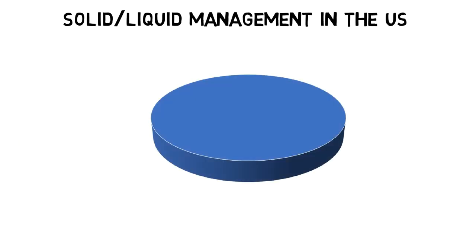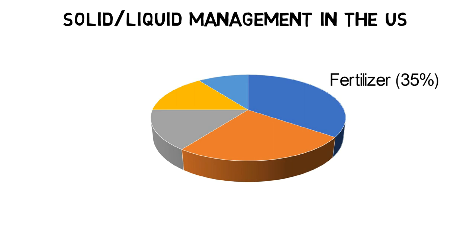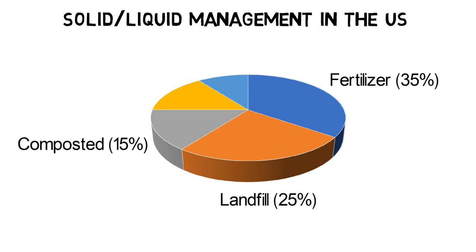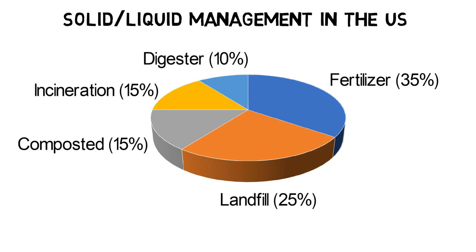In the US, about 35% of WAS is used as fertilizer for agriculture, 25% is disposed in landfills, and each 15% is composted or incinerated. The remaining 10% is treated in anaerobic digesters or processed in different ways.